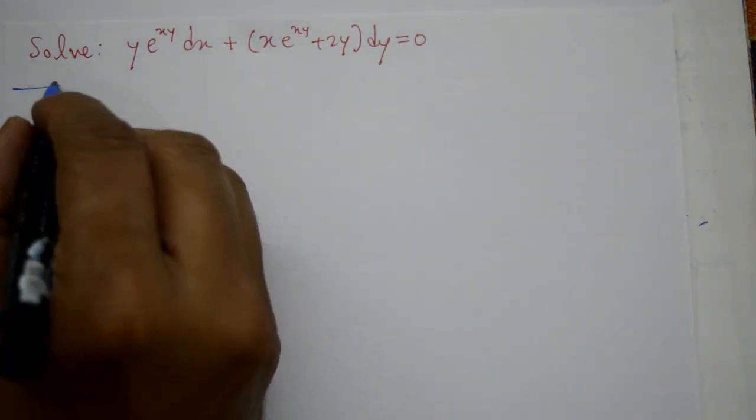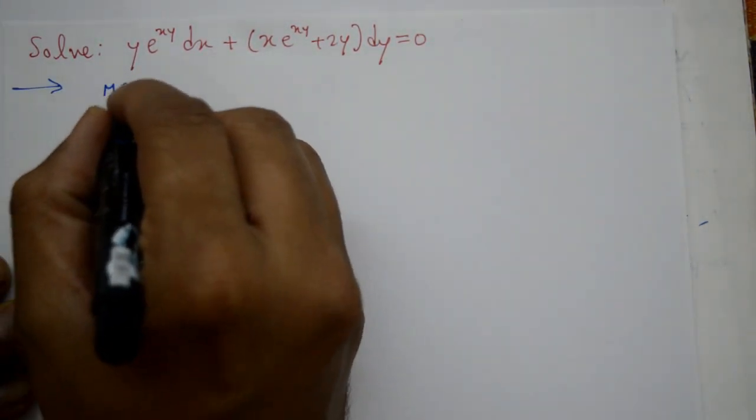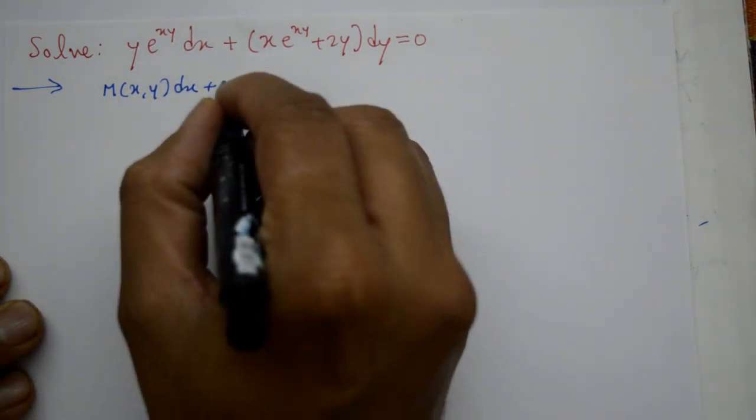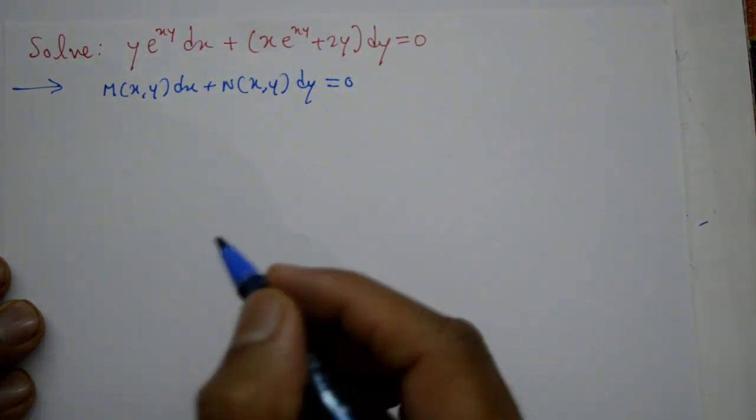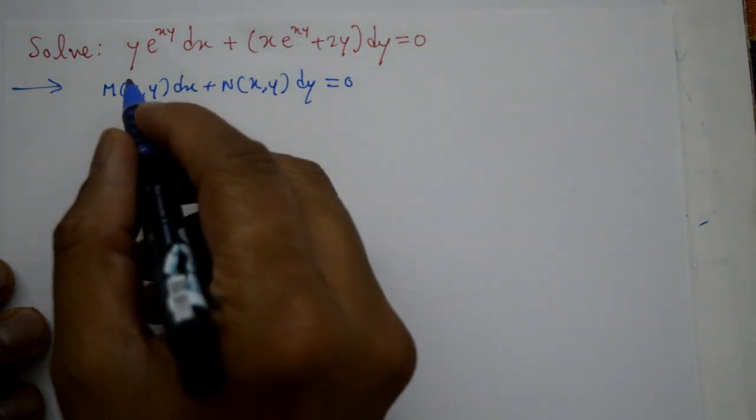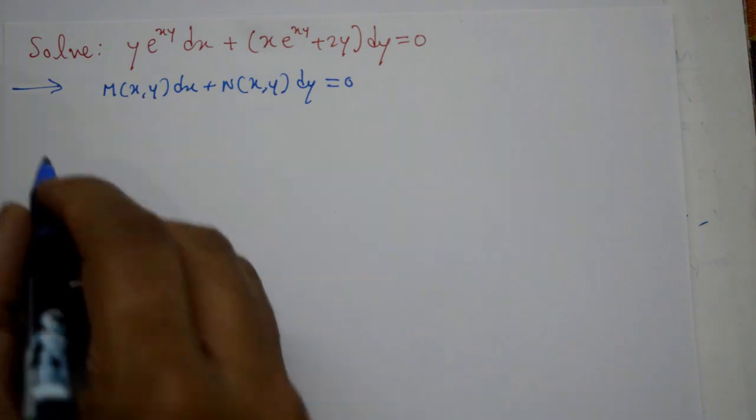The equation is in the form m of xy dx plus n of xy dy equal to 0. So what we'll do is take m and n first.